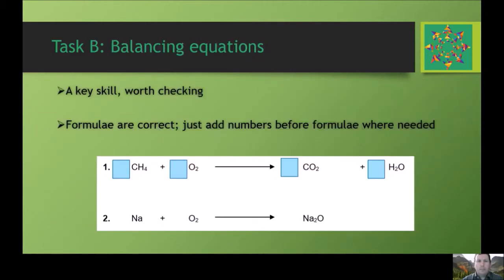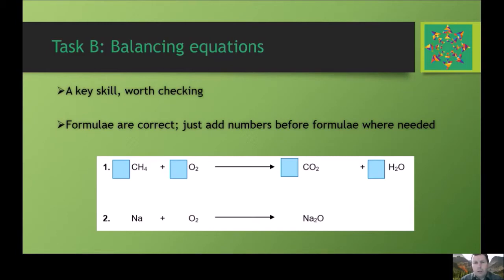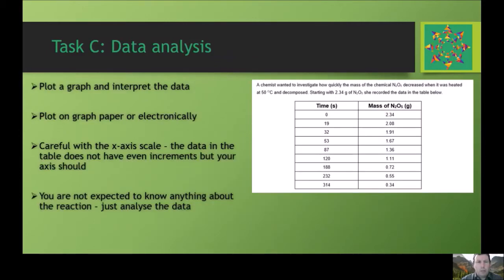Task B is very similar — it's balancing equations, and you would have done this before. It's a key skill and worth checking before we go further. There are 10 questions with the formulae provided correctly; you won't need to change the formulae, but you'll need to balance them by putting numbers in front. Some equations will look familiar from GCSE, and some will look a bit different and test your balancing a bit more.